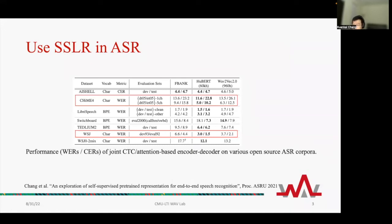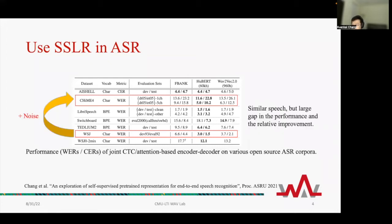This table is taken from our previous paper, showing the ASR performance on various benchmark datasets. Generally speaking, using HuBERT or Wave2Vec 2.0 as SSL representation brings improvements. Let's focus on the results on CHiME-4 and Wall Street Journal corpora, two rows marked in the red rectangle. CHiME-4 contains noisy speech utterances, but the underlying speech utterances are similar to those in the Wall Street Journal, so the results are quite different. There is a large gap in the absolute performance and the relative improvement against the conventional FBank features.